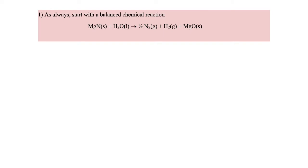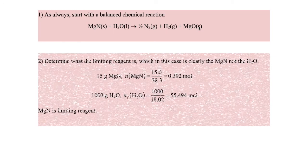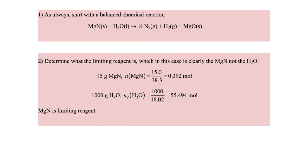As always, start with a balanced chemical reaction, and a balanced chemical reaction includes all of the phase designations. Once we have a balanced chemical reaction, we can determine what the limiting reagent is, which in this case is going to be magnesium nitride, because the quantity of magnesium nitride is far smaller than the quantity of water, with a one-to-one stoichiometry between those reagents.